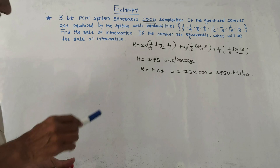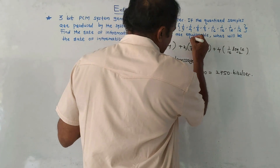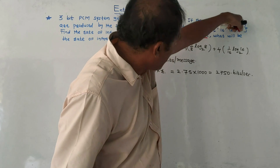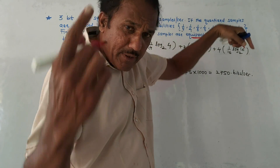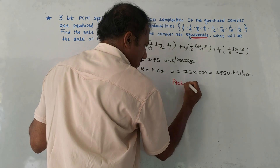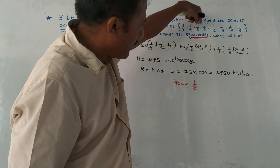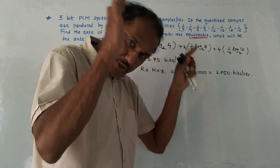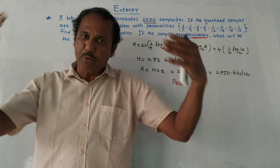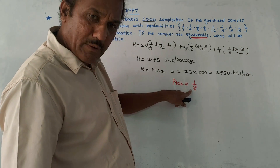For the second part, if the samples are equiprobable — meaning all eight symbols have the same probability — then each probability is 1/8. Instead of the varied probabilities given earlier, every symbol now has probability 1/8.